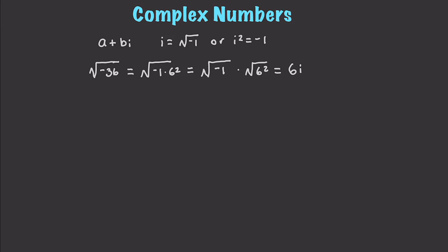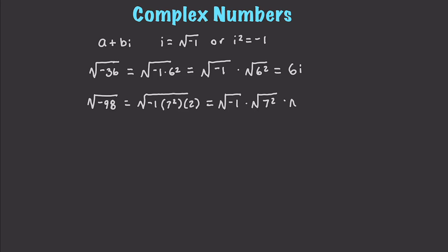Let's work through a couple more. Take √(−98). Based on what we've learned, this factors into √(−1 × 7² × 2), which simplifies to √(−1) × 7 × √2, giving us a final form of 7i√2.